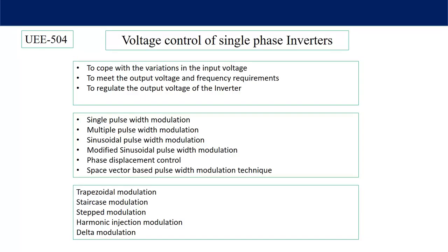Why is voltage control of single phase inverters required? First, to cope with variations in the input voltage — if we want a constant AC output voltage but there is variation in the DC input voltage, then by changing the width of the pulses we can maintain a constant AC output voltage. Second, to meet the output voltage and frequency requirements.